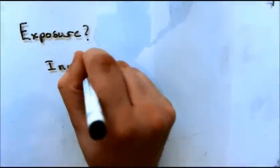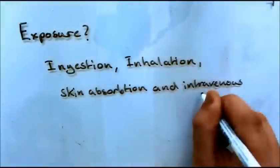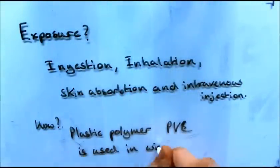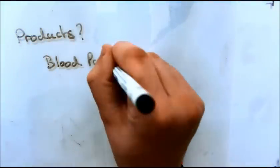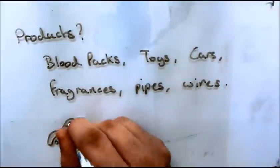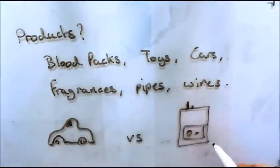But where are we exposed to phthalates? We are exposed everywhere because PVC is everywhere. PVC is used in a range of products because it can take on a range of final properties.